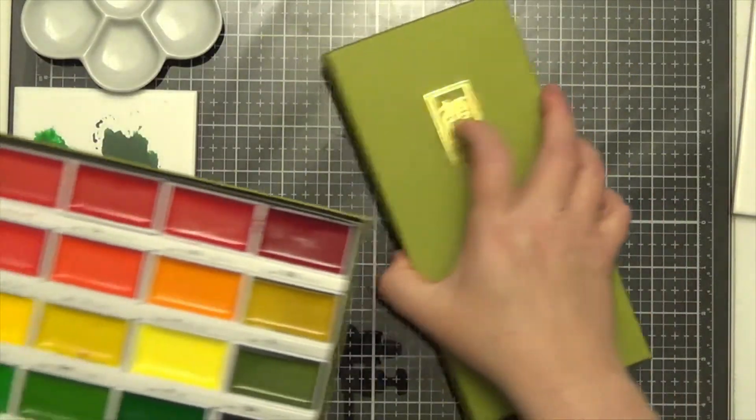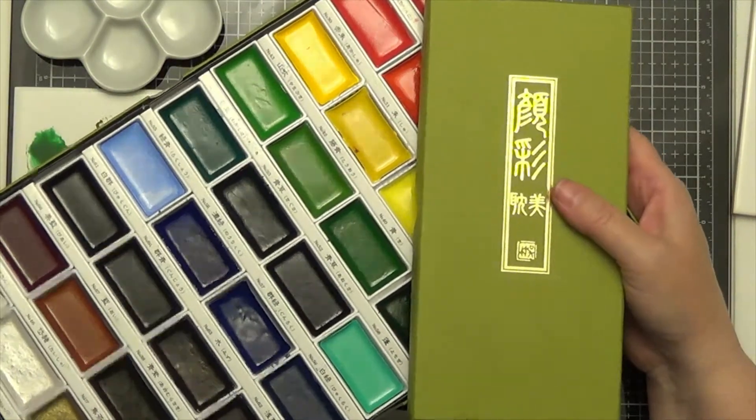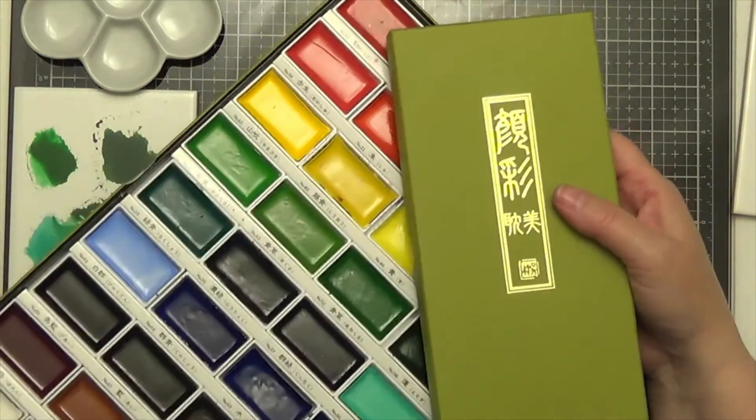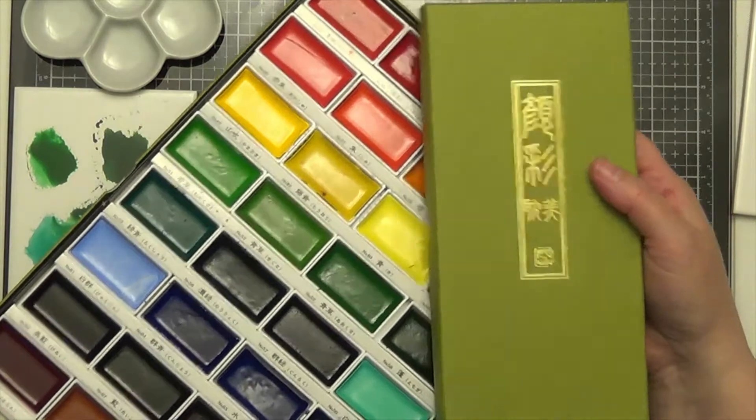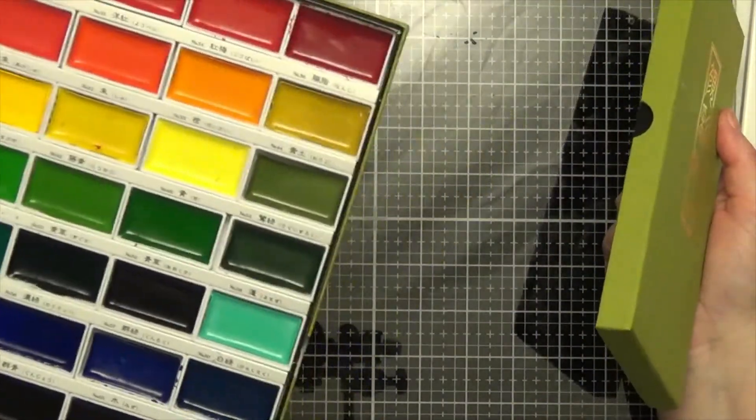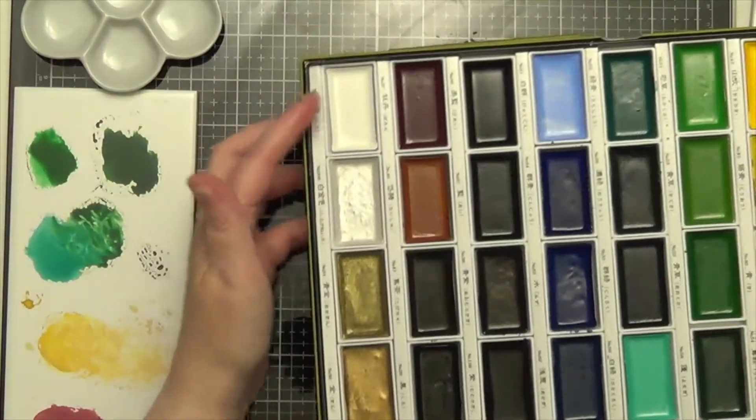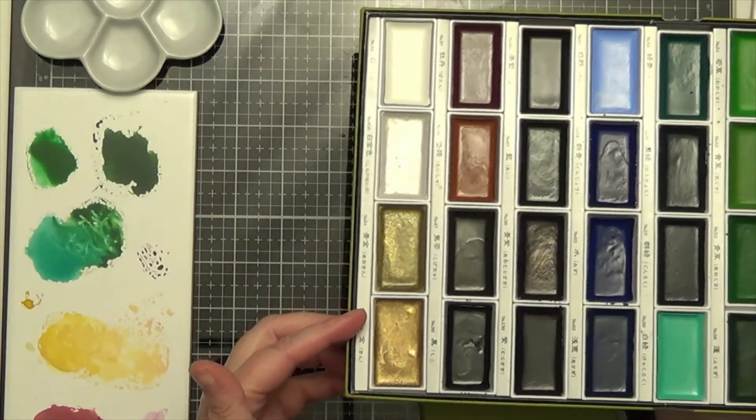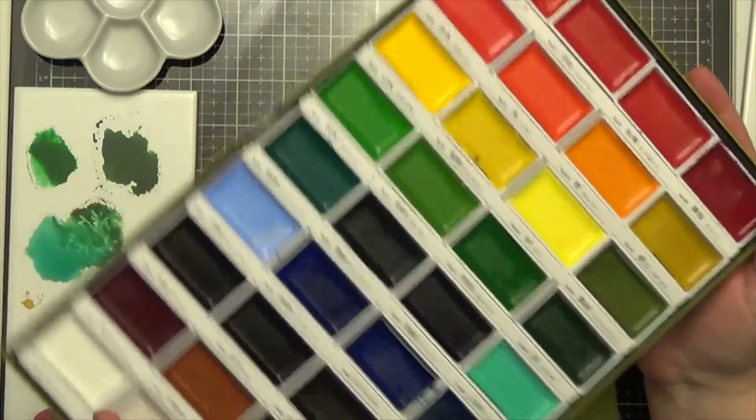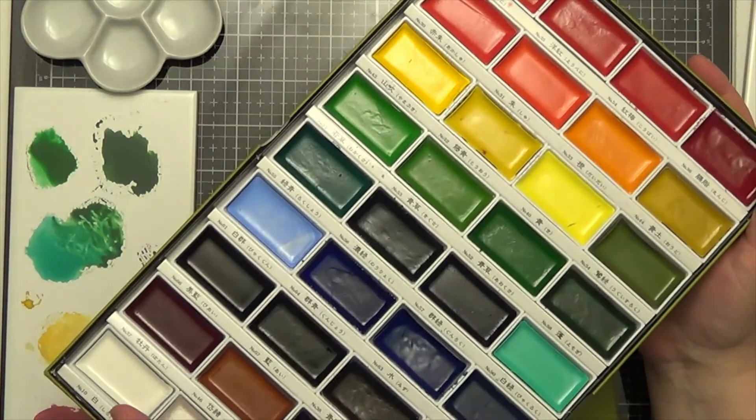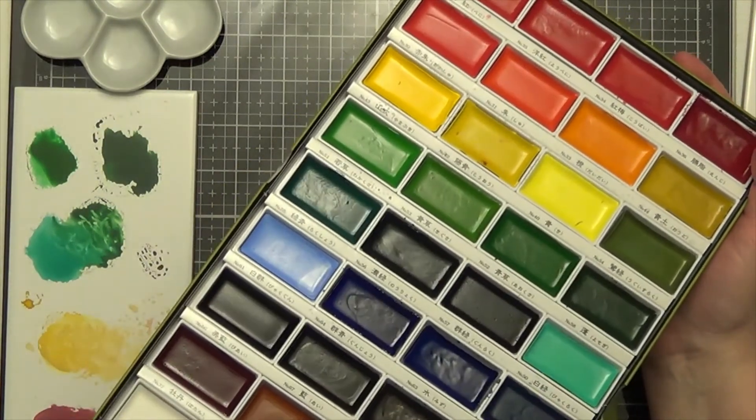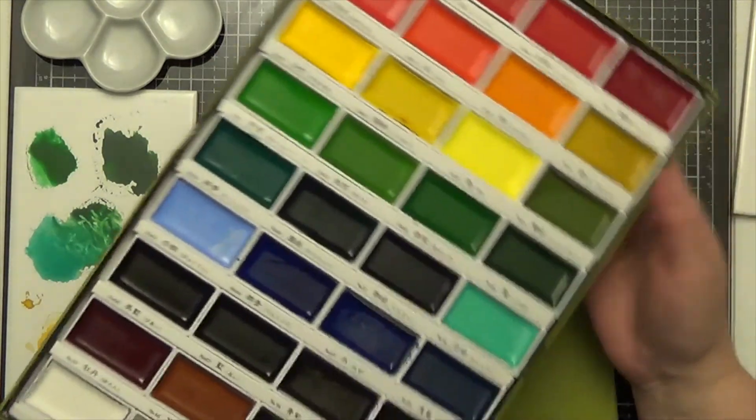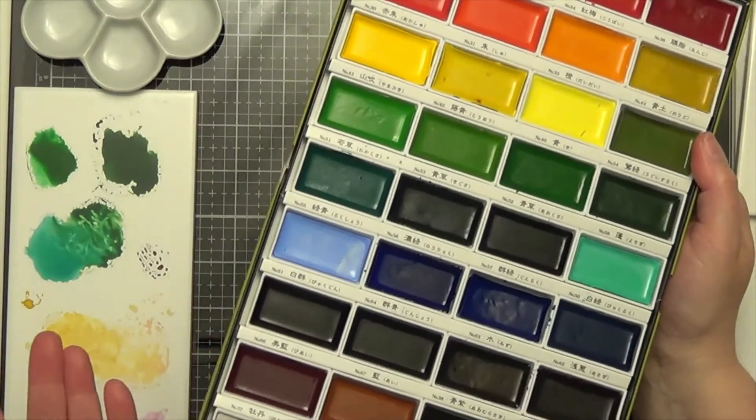I would say that these Kuretake paints are definitely my favorite paints right now. Between these two sets, you've got 48 colors here. You've got a lot of colors, and by the time you start mixing lots of things you can do with them. Plus then you've got some metallics here that you can work with.